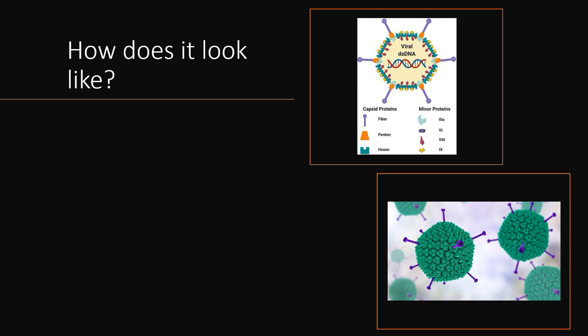When studying any virus, the very first thing to understand is how it looks. It looks something like shown in the picture — the overall schematic drawing shows green colored structures that are proteins, with spikes coming out. This is another schematic model showing the different components of the virus.